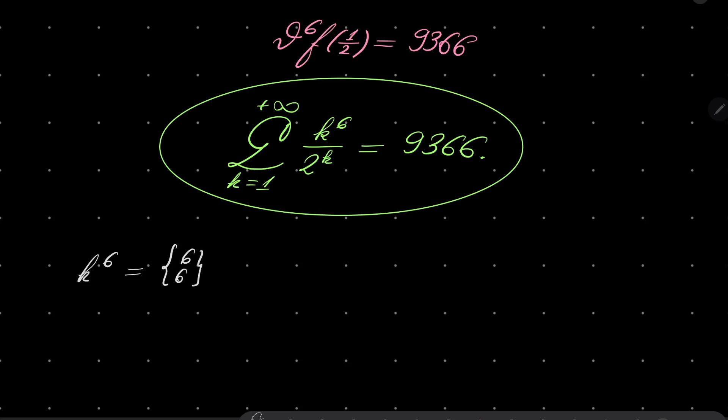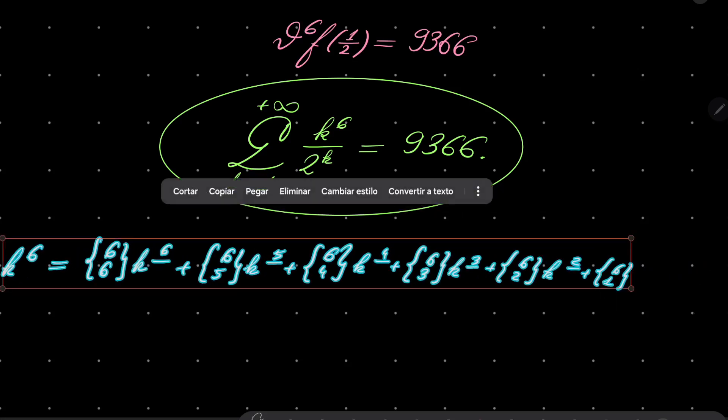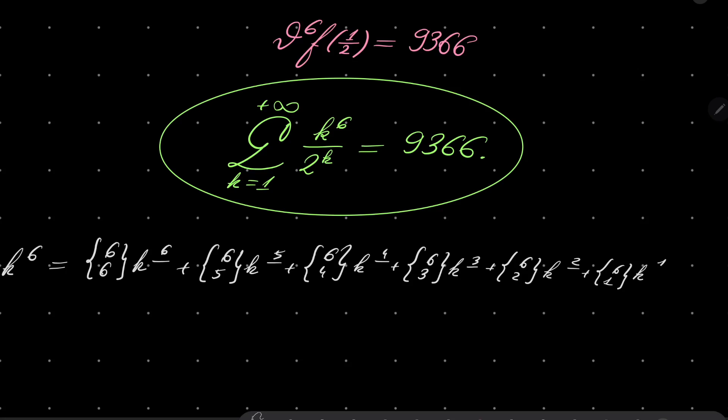Six six k to the sixth falling plus six five k to the fifth power plus six four k to the fourth power plus six three k to the third falling power plus six two k to the second falling power plus six one k to the first power plus six zero times one. And it has some advantage because...